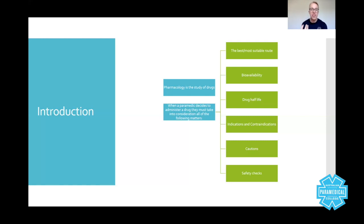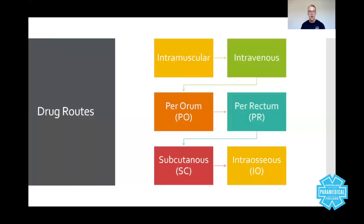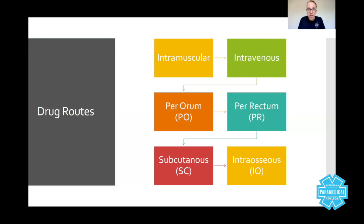There are also safety checks — you've got to go through the right processes before giving any drug. Now, drug routes include intramuscular, intravenous, per oral, per rectum, subcutaneous, and intraosseous — those are the ones we're going to talk about.